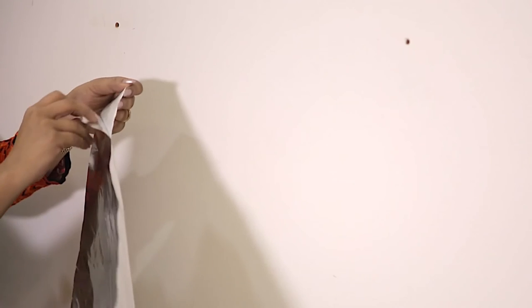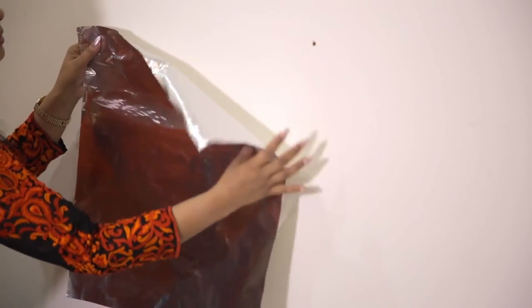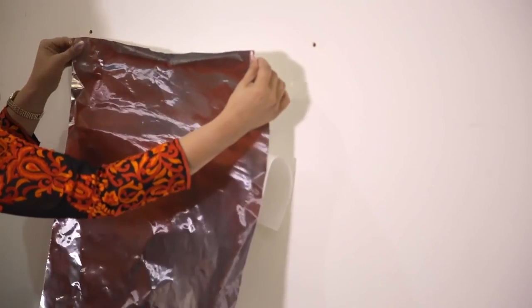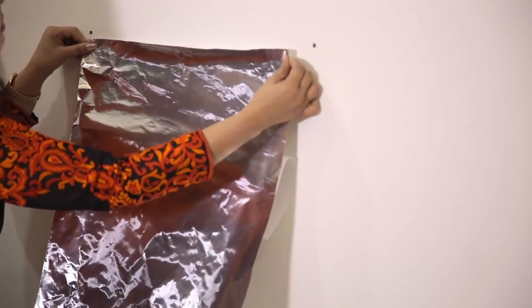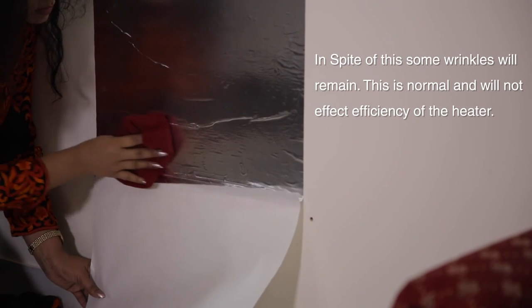Peel the backing off the self-adhesive heat reflector and place it on the wall, approximately at equal distance from the hole locations. Wipe down the heat reflector as you peel the backing to minimize any wrinkles.